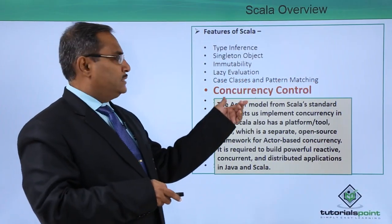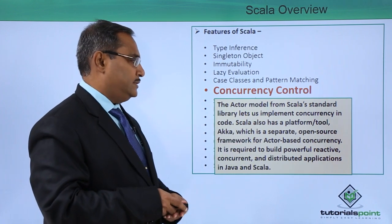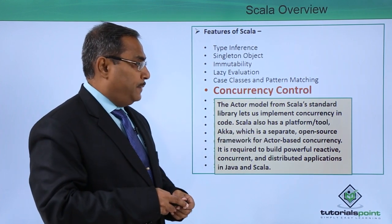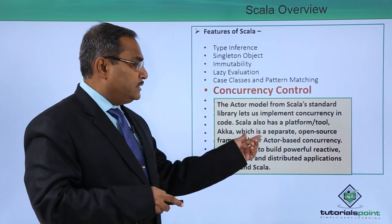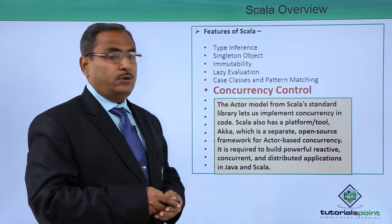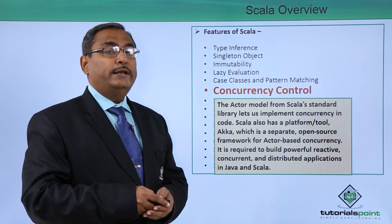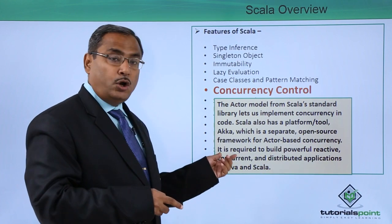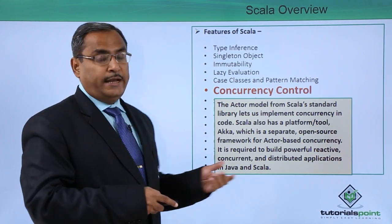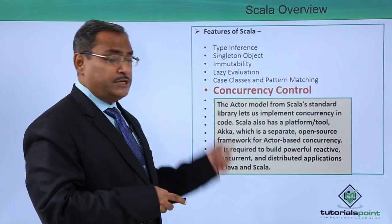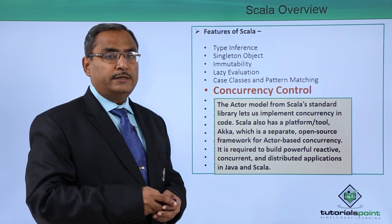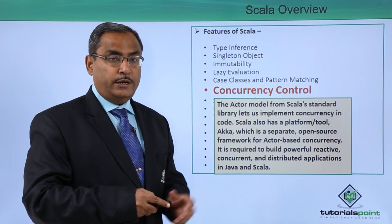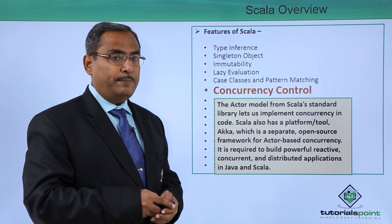The next property is concurrency control. The actor model from Scala's standard library lets us implement concurrency in code. Scala also has AKKA, a separate open source framework for actor-based concurrency. In distributed environments where multiple transactions and threads get executed, concurrency control is essential, and Scala is very suitable for building such applications.